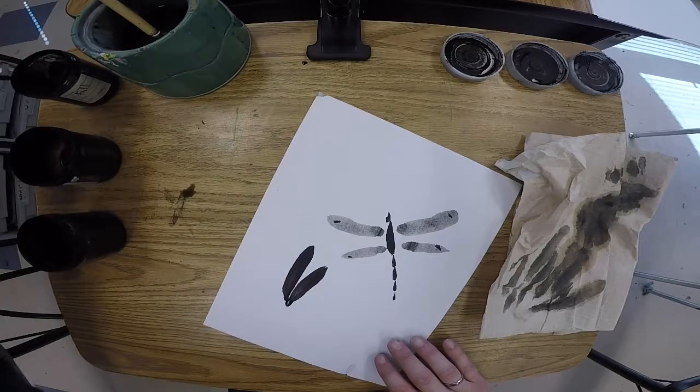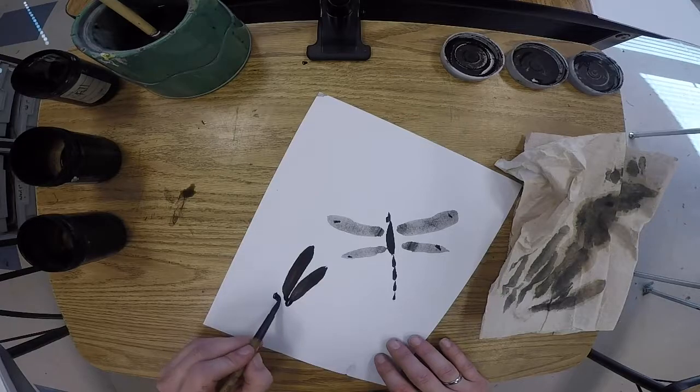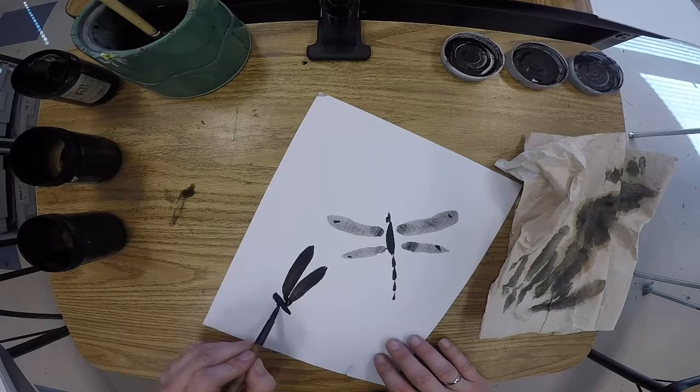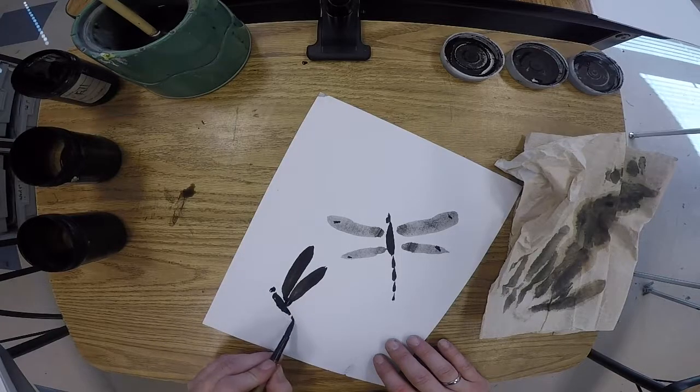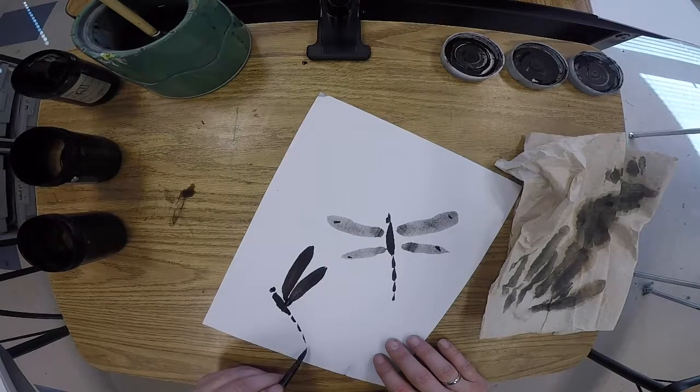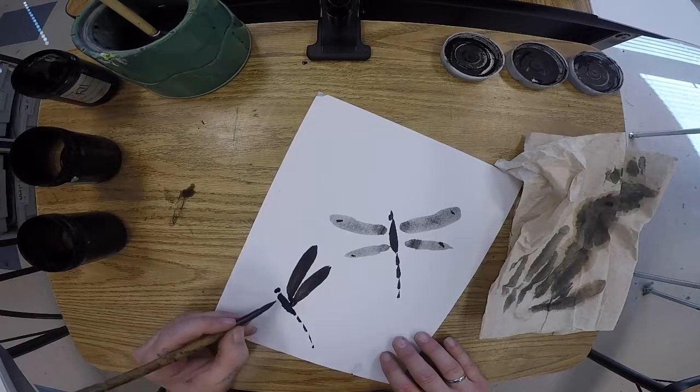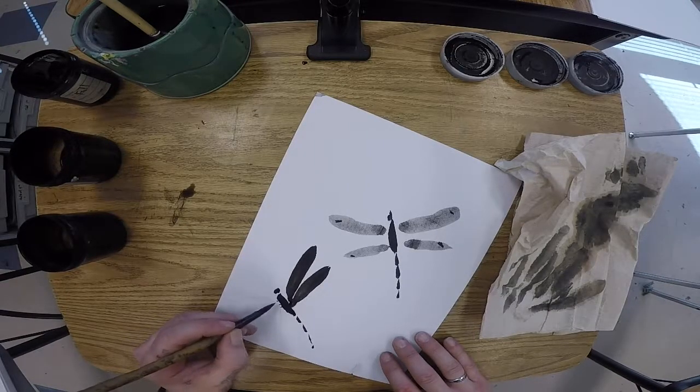We still want to use our full ink. So we make our abdomen, our head, and our thorax trailing off. This would be a great one. We can also give him some little legs, maybe.